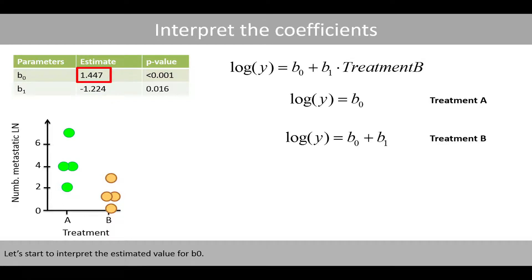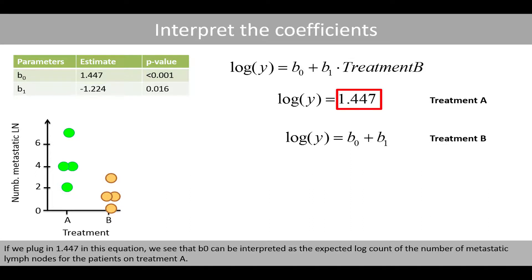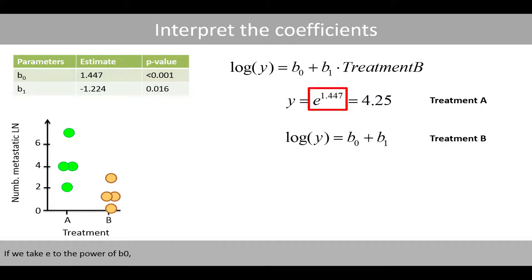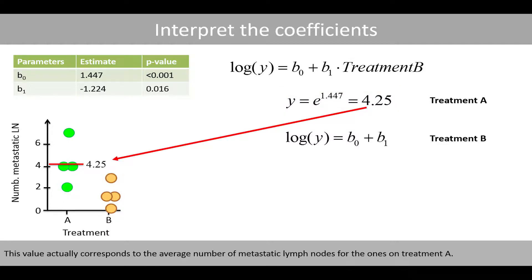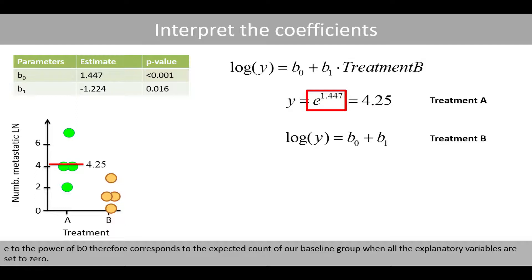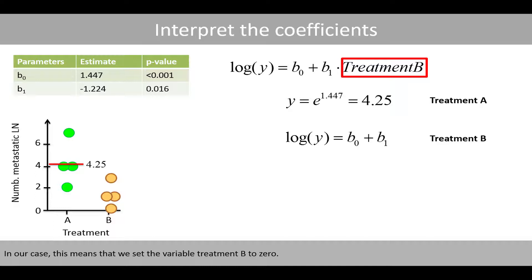Let's start by interpreting the estimated value for B0. If we plug in 1.447 in this equation, we see that B0 can be interpreted as the expected log count of the number of metastatic lymph nodes for patients on treatment A. If we take e to the power of B0, we see that the expected count for those on treatment A is 4.25. This value actually corresponds to the average number of metastatic lymph nodes for patients on treatment A. Therefore, e to the power of B0 corresponds to the expected count of our baseline group when all explanatory variables are set to zero — in our case, when treatment B is set to zero.